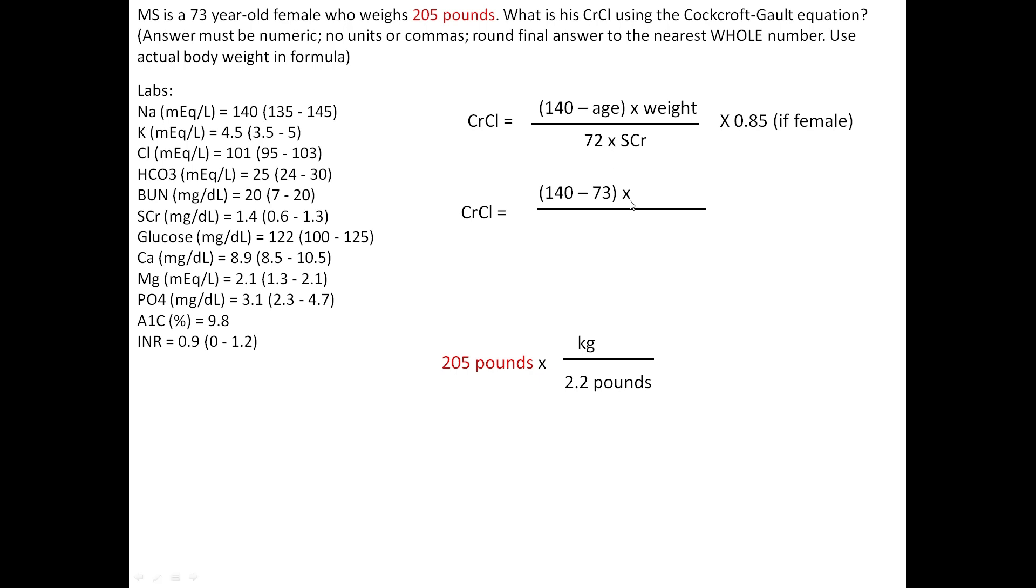You're going to multiply by weight. But of course, they're going to give you the weight in pounds, which is 205 pounds. So convert pounds to kilograms by dividing by 2.2.